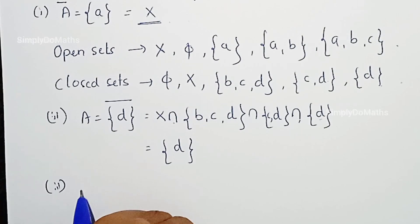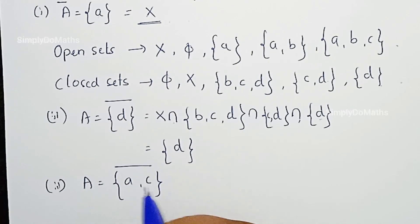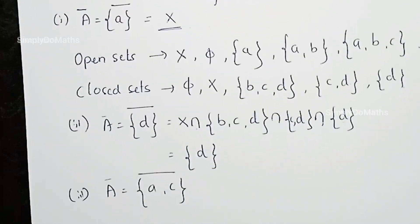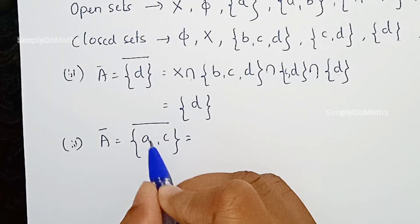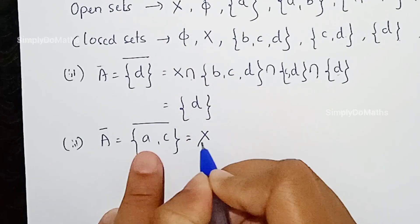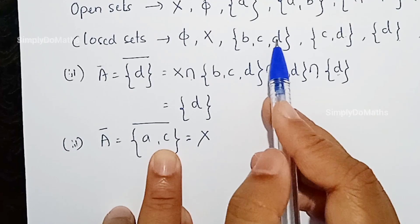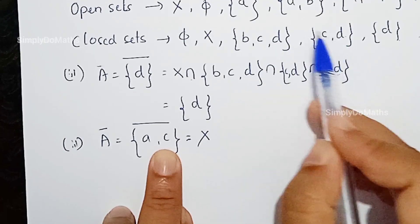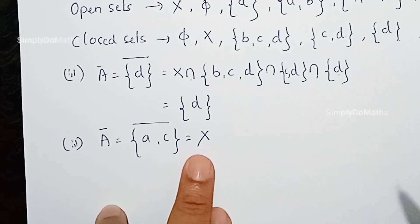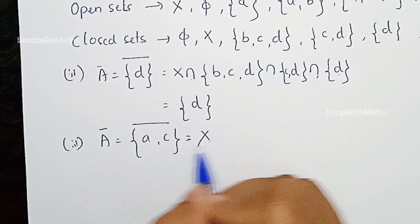Let's take another example. Consider the subset {A, C}. The closed sets must contain both A and C. X contains both A and C. {B, C, D} does not contain A, so it won't be considered. {C, D} does not contain A, so it won't be considered. {D} won't come either. X is the only closed set containing both A and C, so the closure of {A, C} is X itself.